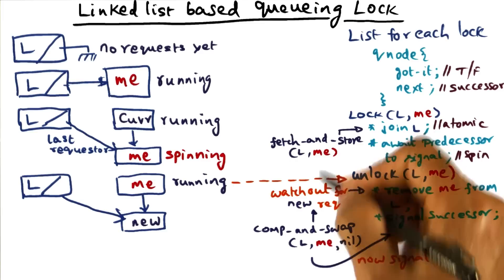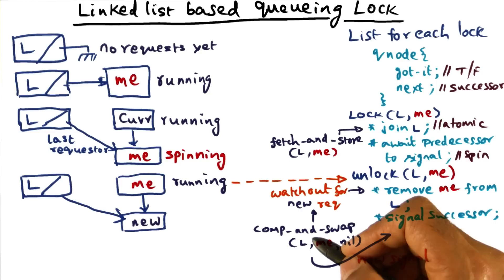And similarly, the array based queuing lock required a fetch and increment. Now it is possible that the architecture doesn't have that. If that is the case, then you have to simulate these fancier read-modify-write instructions using the simpler test and set instructions.